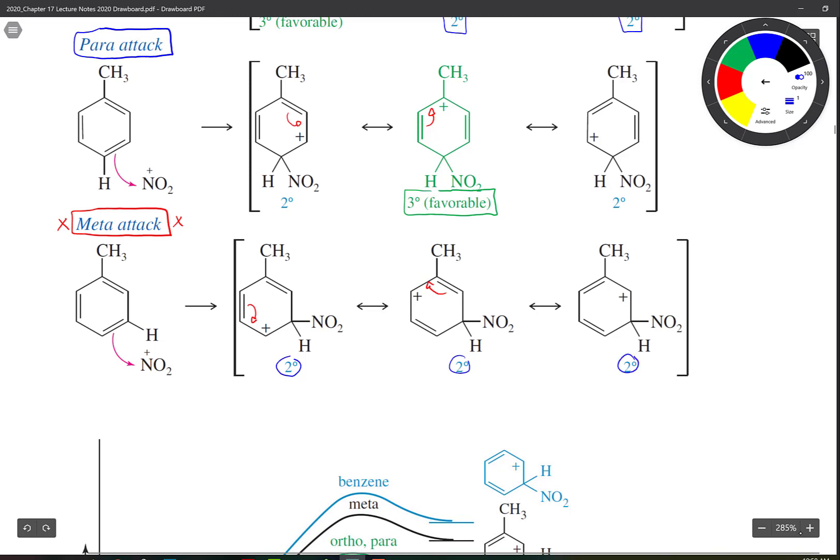But notice that all of our carbocations here are secondary, secondary, and secondary. So they're not terrible. They're allylic and secondary. But we're not having that tertiary allylic resonance that we see for para and ortho.